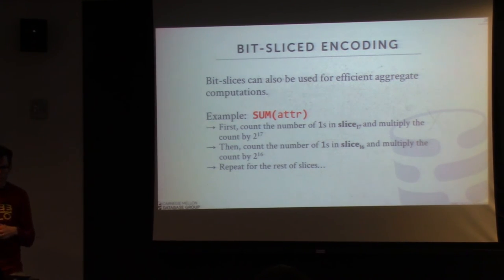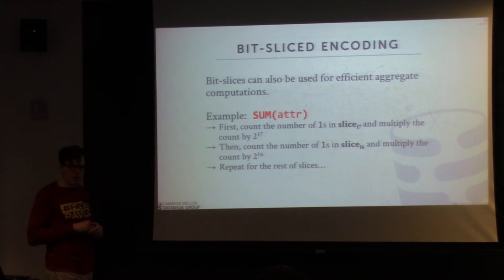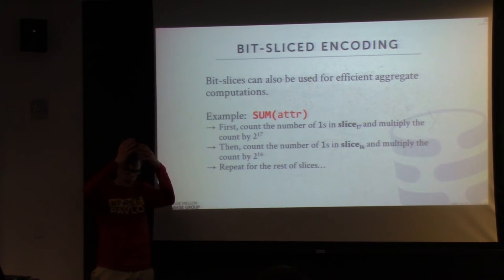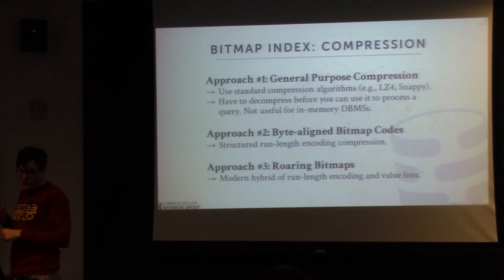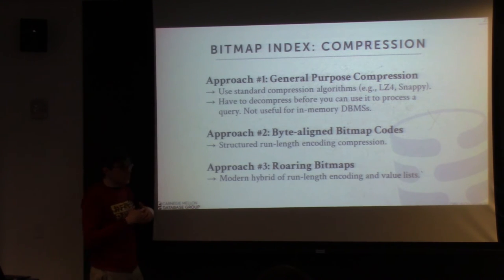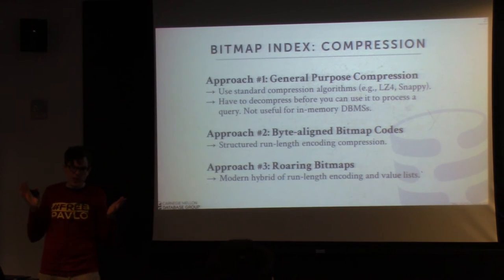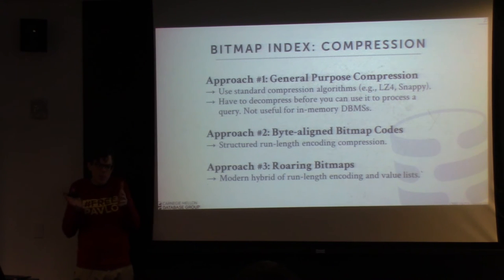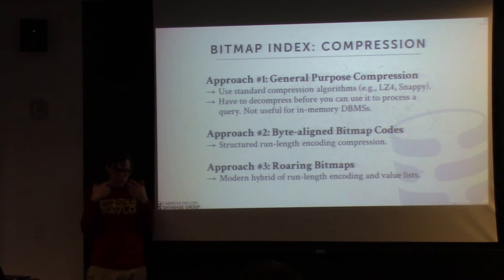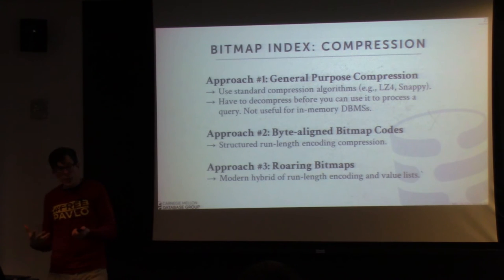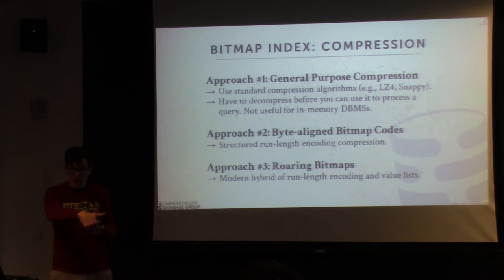Bit slicing is another way to represent a bitmap index — storing individual bits for values in bit-slice vectors rather than all entries for a single value. Now we can talk about different compression schemes. The first approach is to use an off-the-shelf general-purpose compression algorithm — LZ4, Snappy, or the popular one now, ZSTD. You're already breaking up your bitmap or columnar indexes into chunks; you just take that chunk and run a compressor on it. The problem is that any time you need to do a read into that bitmap, you have to decompress it first. So if it's a disk-based database system...